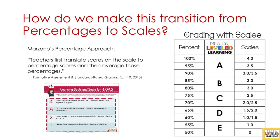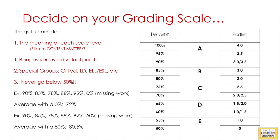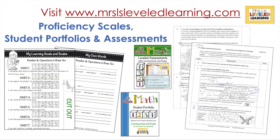When deciding on your scale, consider the traditional meanings of A, B, C, and D, the traditional percentiles that go along with each, and the meaning of each level of the scale. I hope this has given you helpful things to consider as you solidify your grading scale, understand the meanings of each level, and apply it to your own assessments. If you'd like more help or examples, please visit my website, mrslslevellearning.com — I have proficiency scales, portfolios, and assessments already made for grades one through eight in math and language arts. Feel free to leave any comments or feedback, and thank you for your time.